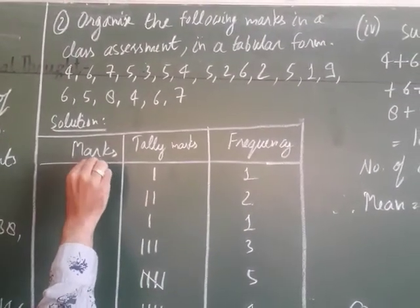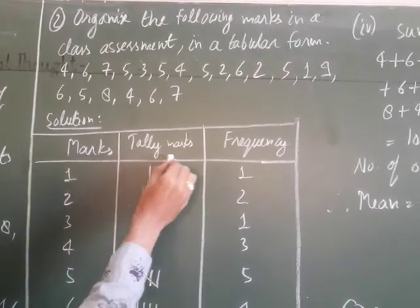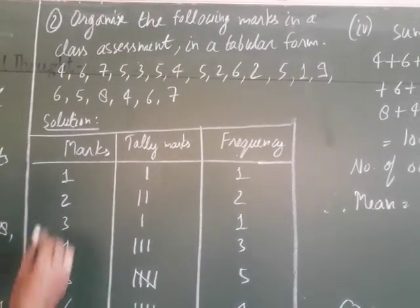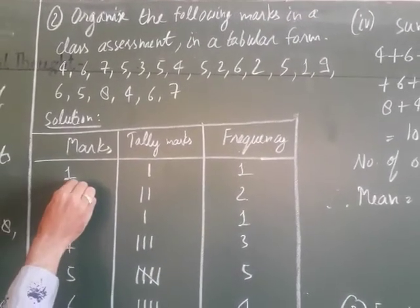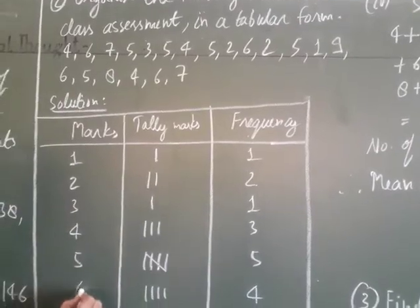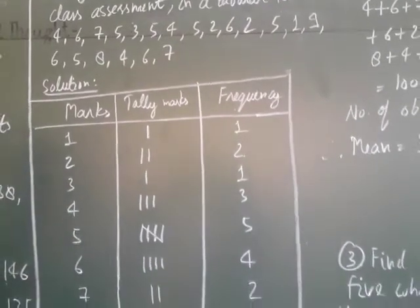You will make a table with columns: Marks, Tally Marks, and Frequency. The marks range from 1, 2, 3, 4, 5, 6, 7, 8, and 9.